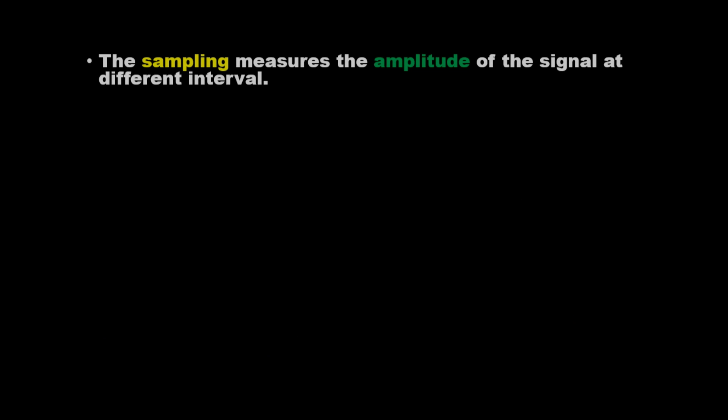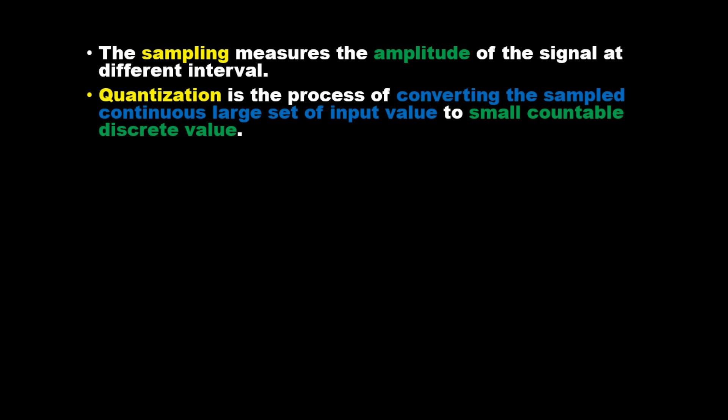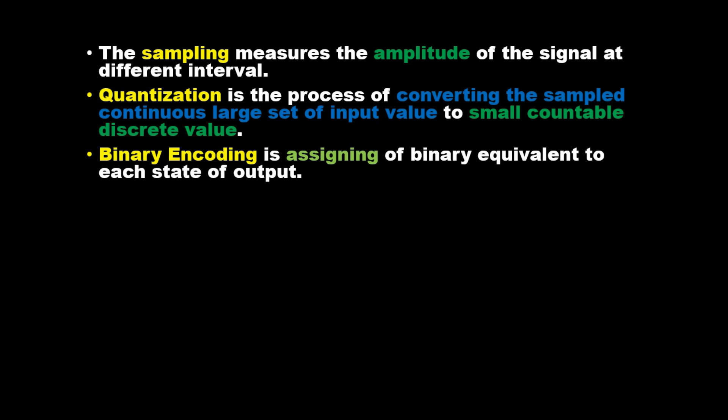The sampling measures the amplitude of the signal at different intervals. Quantization is the process of converting the sampled continuous large set of input values to small countable discrete values. Binary encoding is assigning of binary equivalent to each state of output.